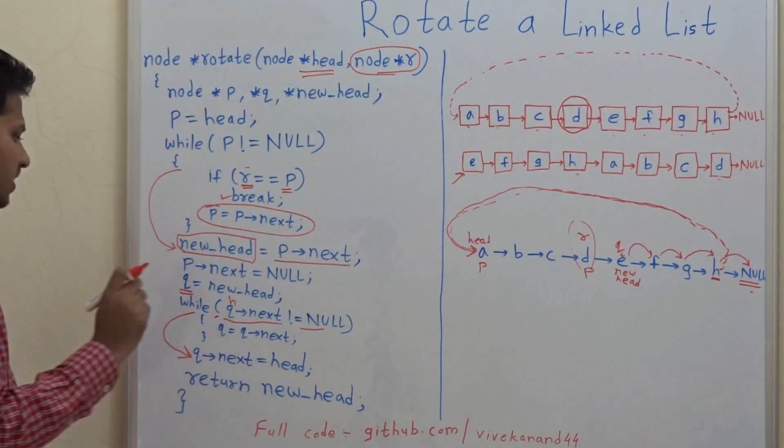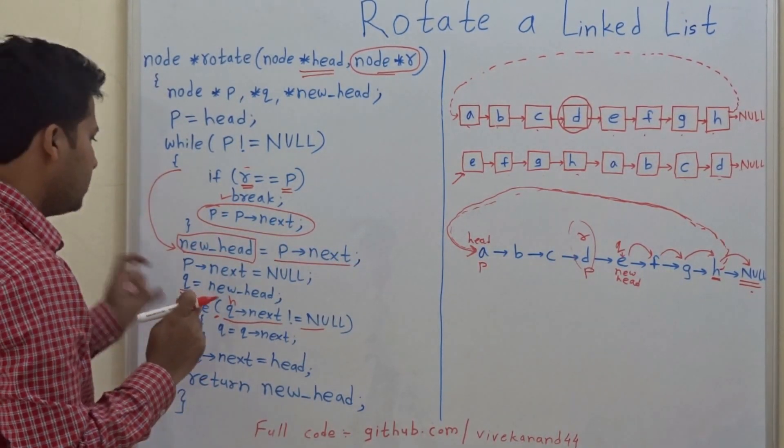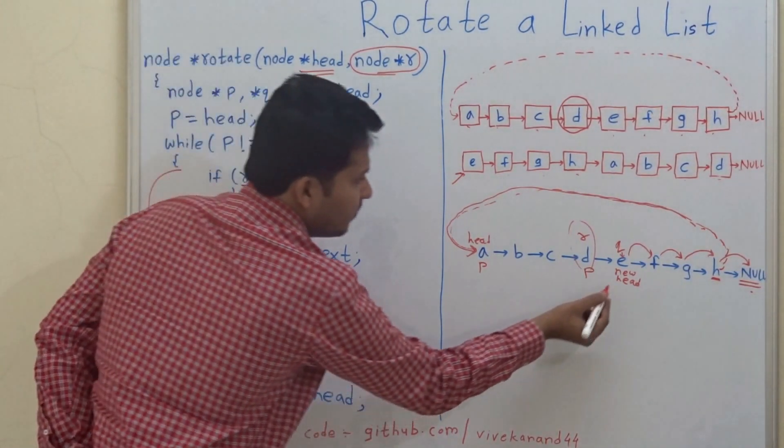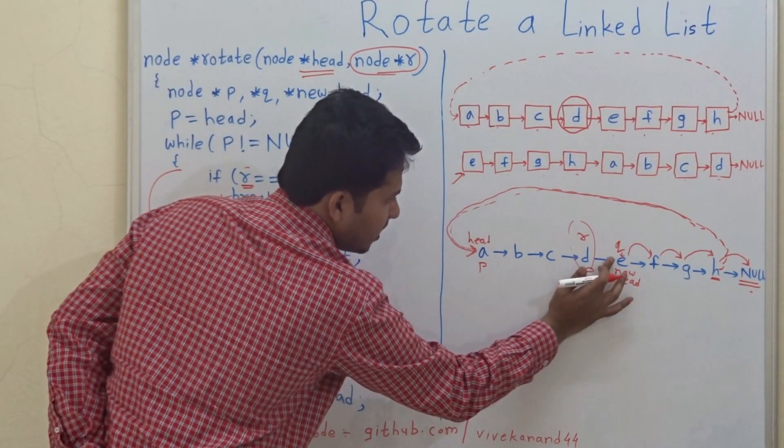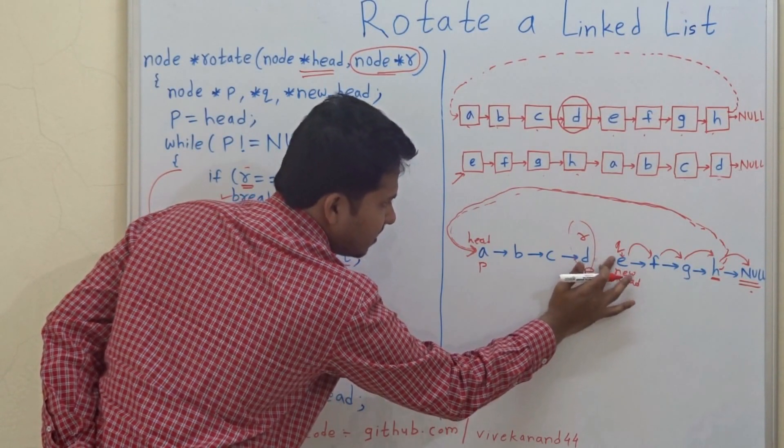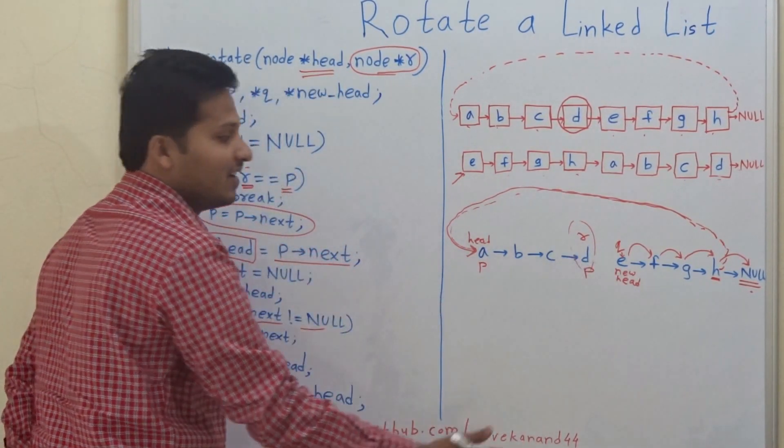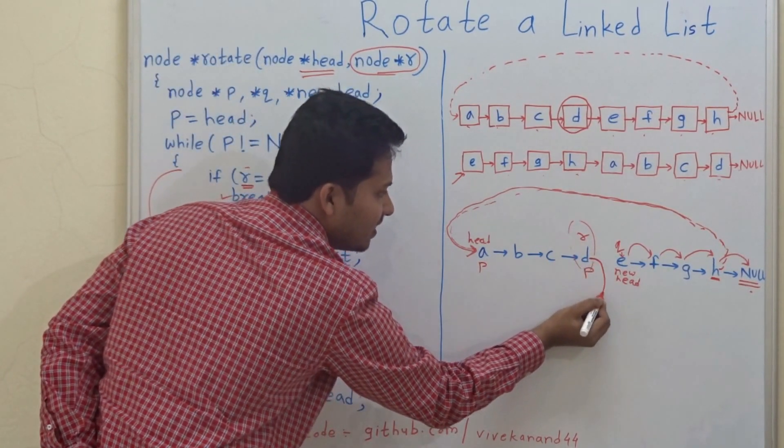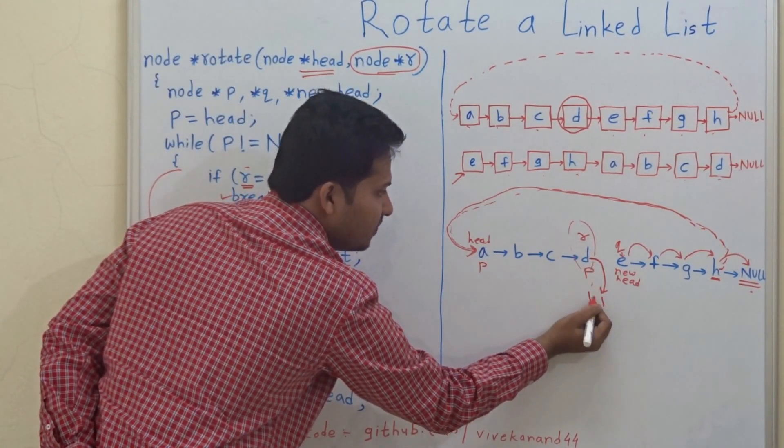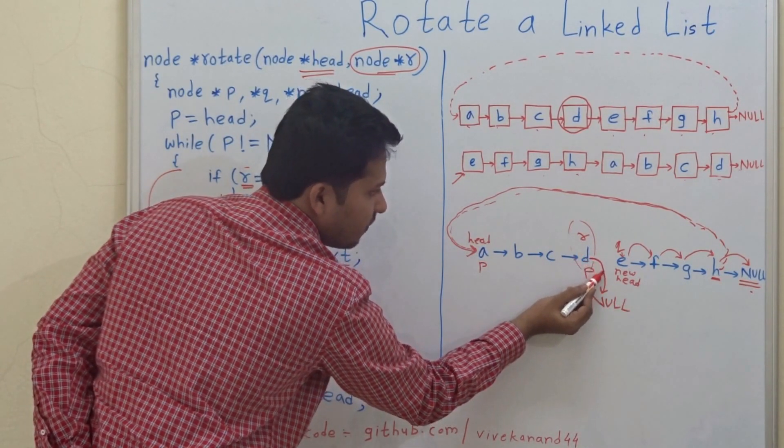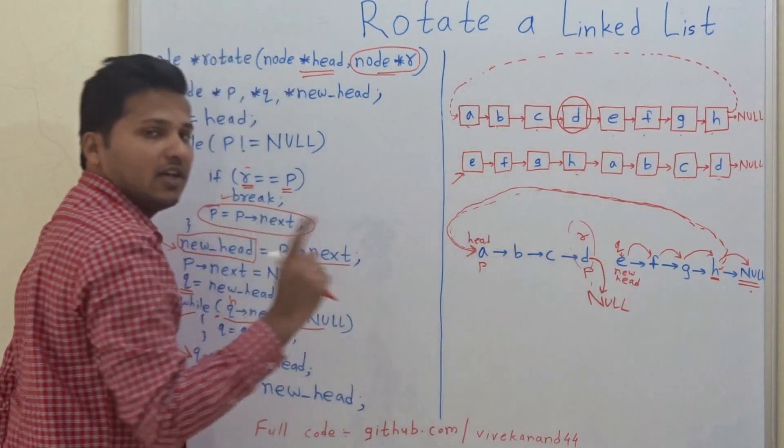Now, a very important point here is that when we made this as new head, we have to break this link and make it as the end of the new linked list. So we have to make next pointer of D as null.